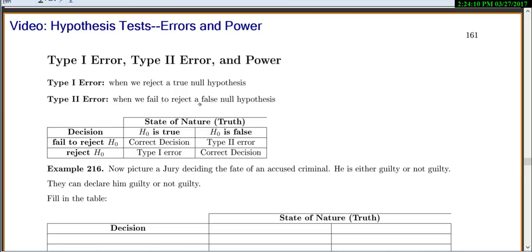In this little table we're trying to summarize - across the top is the truth, so either the null is true or the null is false. Over the side we have our decision, so either we fail to reject it or we reject it. If our null is true and we fail to reject it, that would be correct. But if our null is true and we reject it, that's a type 1 error.